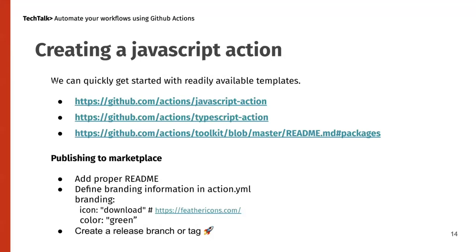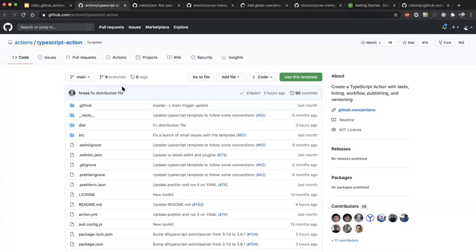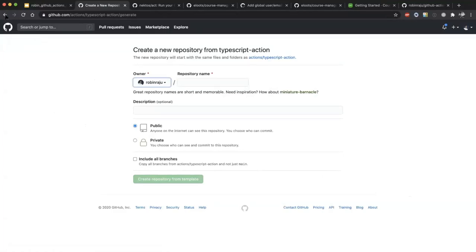The most commonly used approach is creating a JavaScript action. If you want to build your own action, there are many actions available in the marketplace, but you can create custom logic for a particular workflow step. GitHub Actions team has provided templates — a JavaScript action template and a TypeScript action template. You can simply use one of these templates and it will create a repo for you using that template.